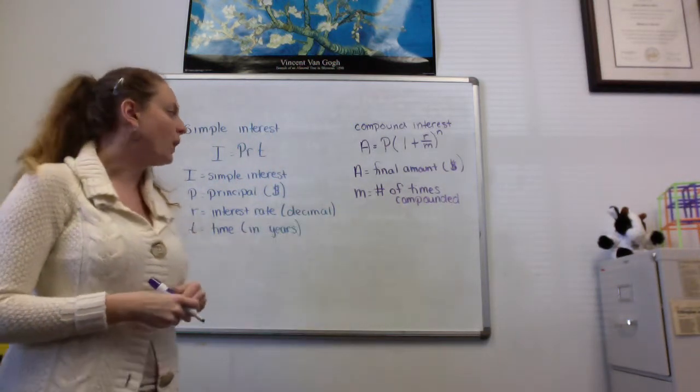M stands for the number of times compounded. And that's going to be given in the formula. I said they're always going to use the word compounded. So they might say something's compounded monthly or compounded quarterly. If something's compounded monthly, then M is 12. If something's compounded quarterly, then M is 4. There are 4 quarters in a year. If something's compounded annually, that's once a year, like we have 1 birthday a year. If something's compounded biannually, that's 2 times a year, bi meaning 2 like a bicycle.